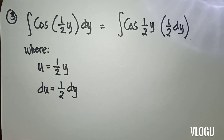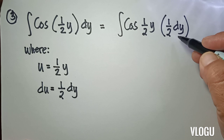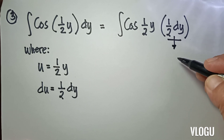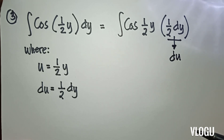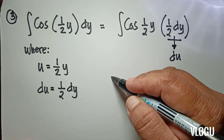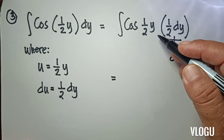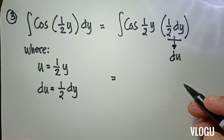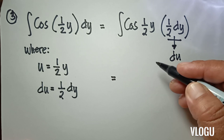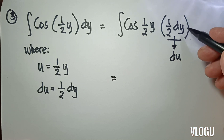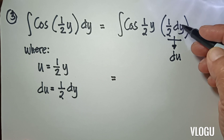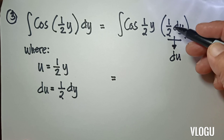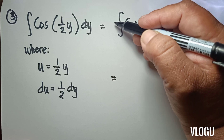Looking at the expression, ½ dy is our du. Since we multiply ½ here, giving us ½ dy as du, we are going to multiply 2 outside.